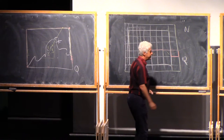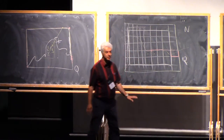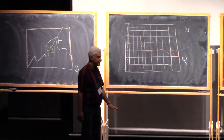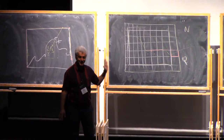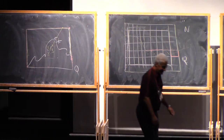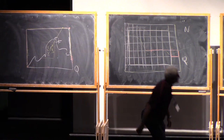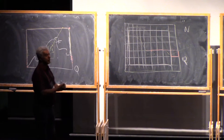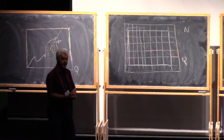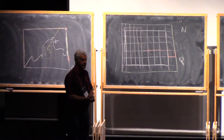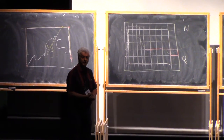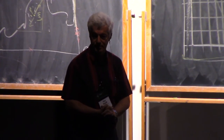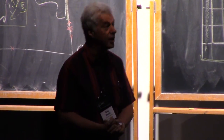Since we're using this Federer-Fleming projection all the time, it's better. I try to do pictures in 3D, but it's not clear — it's always working better. So let's try to use it and let's try to do Ahlfors regularity — the upper bound on a set of large co-dimension — where we stopped last time.